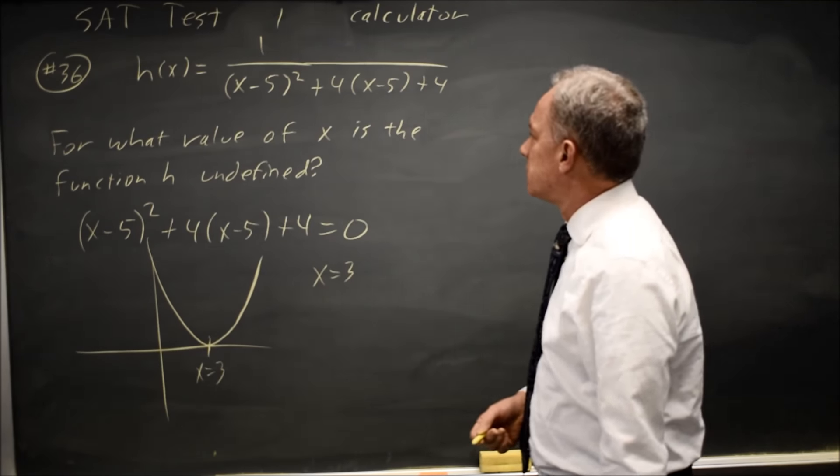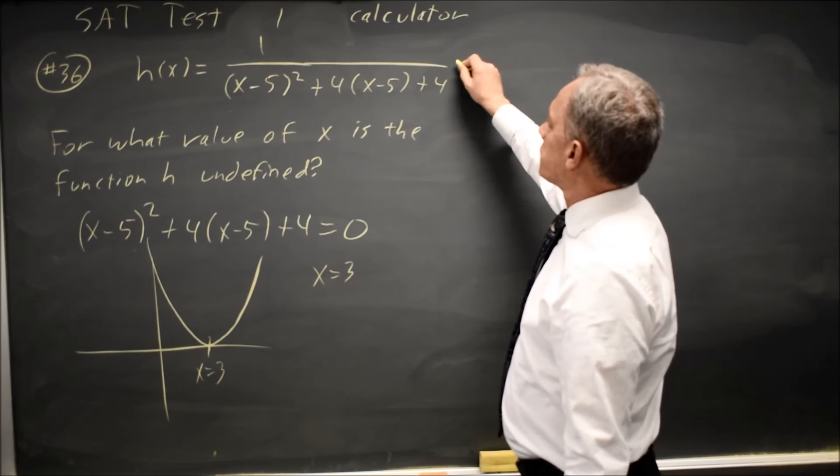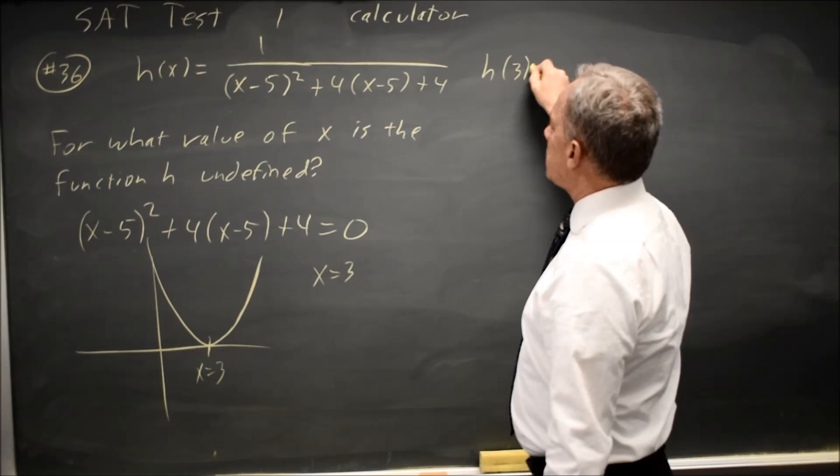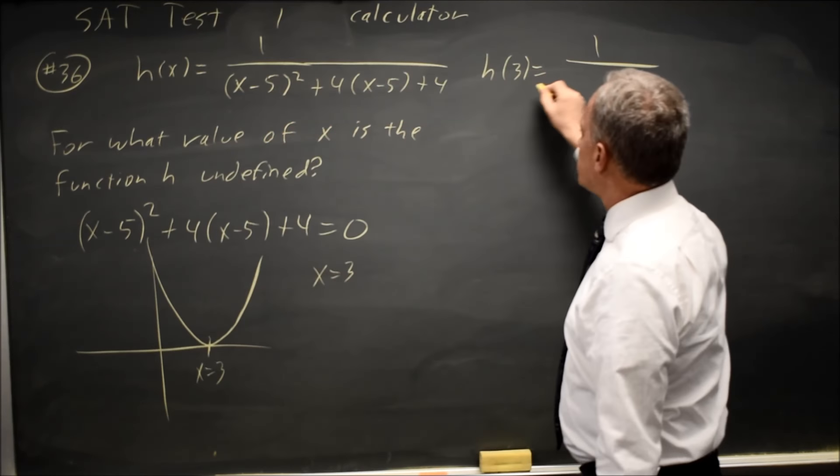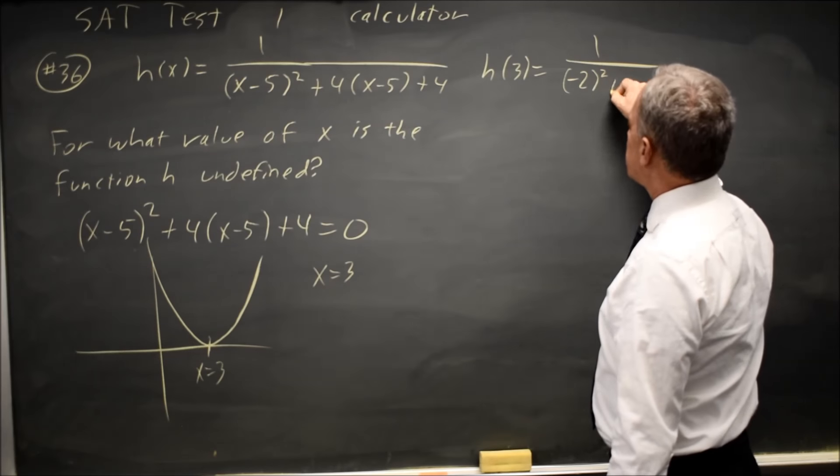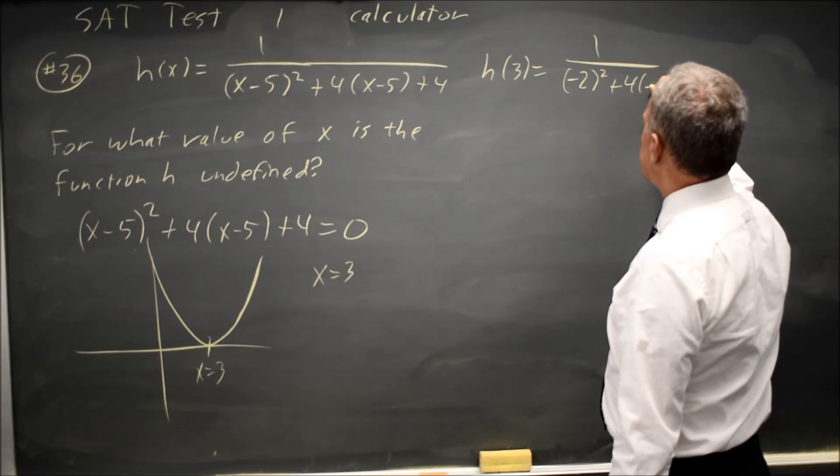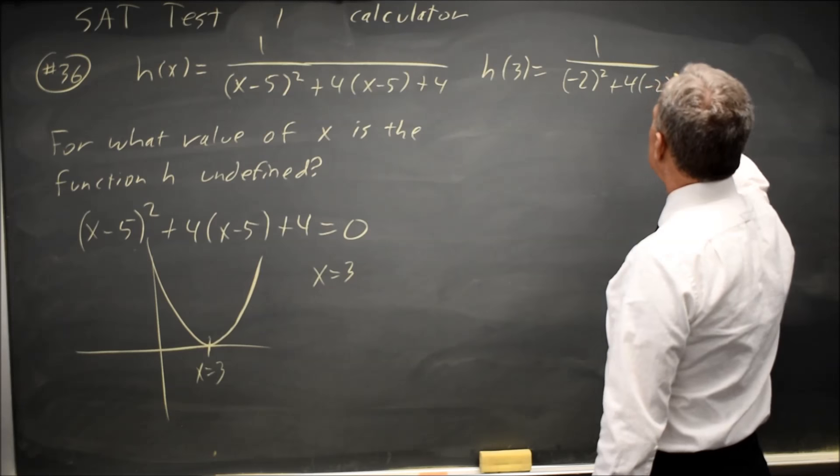At x equals 3, I'm dividing by 0. Let's check that. h(3) equals 1 over (3 - 5) is -2, (-2)² + 4 times (3 - 5) is still -2, plus 4.